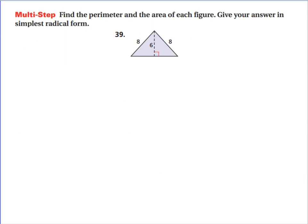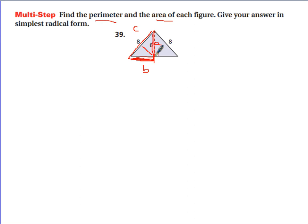The other kind of multi-step problem is finding the perimeter and the area. To find the perimeter I need to figure out how long this side is. I know that this side is 8, this side is 8, and the middle height is 6. So let's find how long this slant part is. Across from the right angle that's your C, and the other sides are your A and B — looking at the triangle on the left.